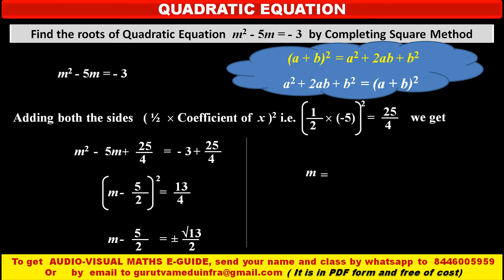Shifting minus 5 upon 2 in the right hand side, it becomes plus. So we get value of variable m as plus minus root 13 plus 5 upon denominator, we can take common 2, because both sections have common, same denominator 2.